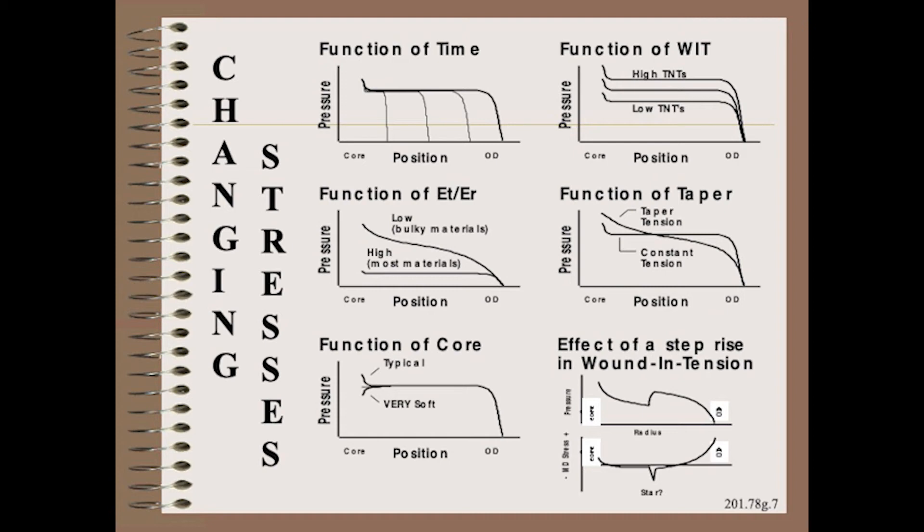Remember, all you need to know about inner layer pressure is high, medium, low. High, medium, low as you wind the roll. High, medium, low as you unwind the roll. High, medium, low for tight rolls, loose rolls, taper wind, constant wind, bulky webs, stiff webs, almost any core. Pretty boring for the most part. Pressure is simply high, medium, low. The one not at all boring exception occurs not so much in the ZD but rather in the MD.